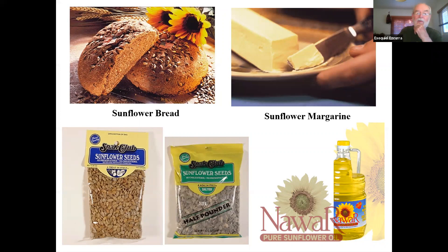In the United States, sunflower is used to make sunflower bread — a mixture of sunflower seed that gives an oily, very nice taste together with wheat. Sunflower oil is also used to make margarine. And of course, though not in the same quantities as Russians snack, we also snack on sunflower seeds.